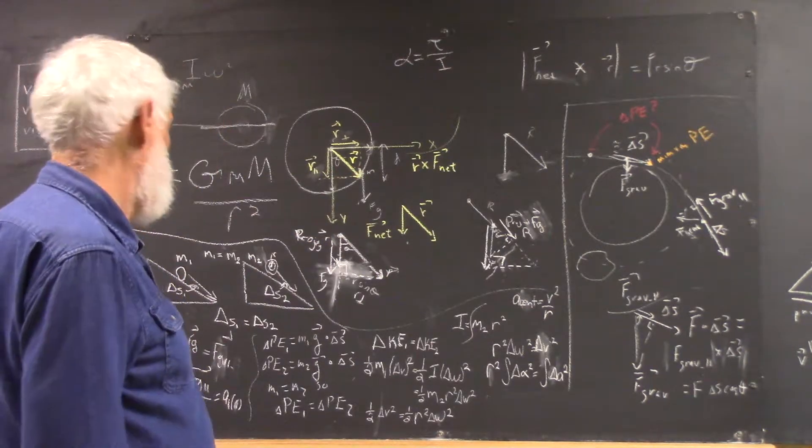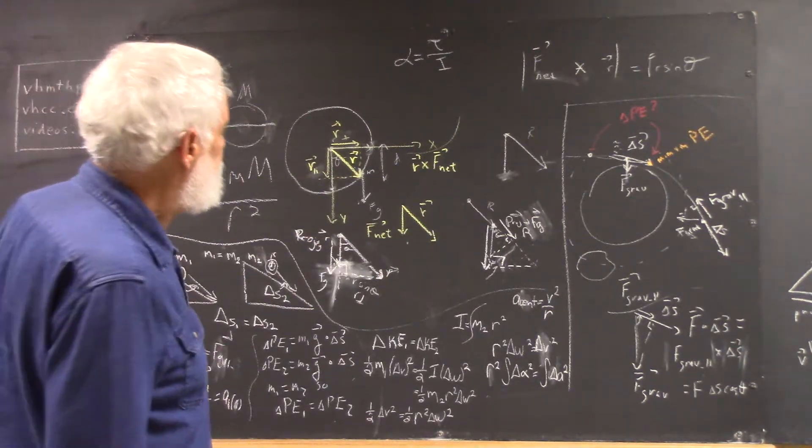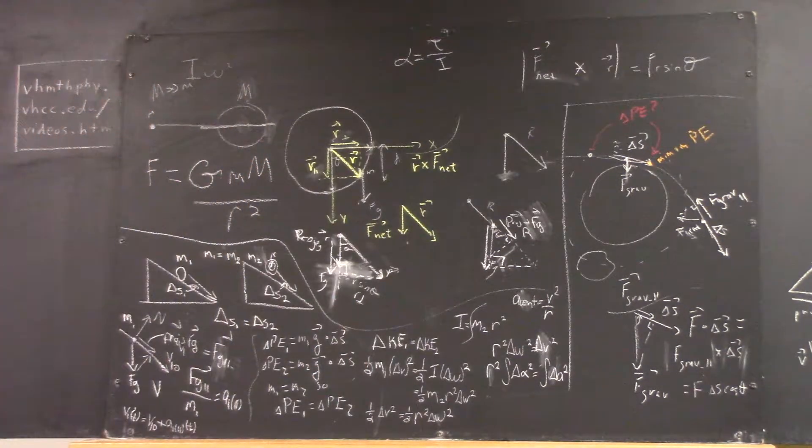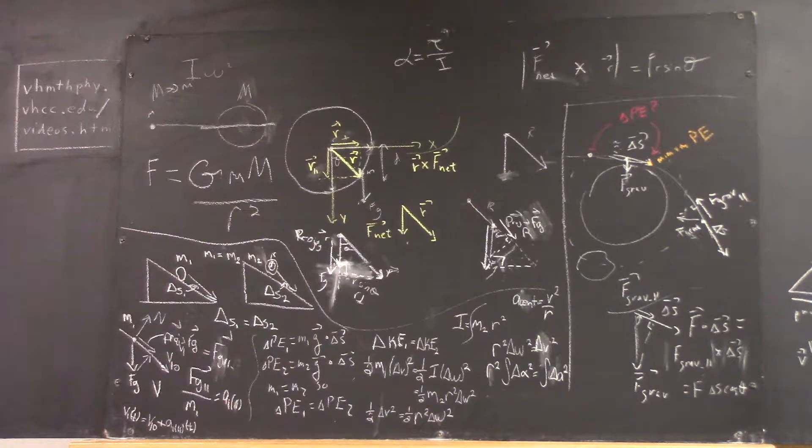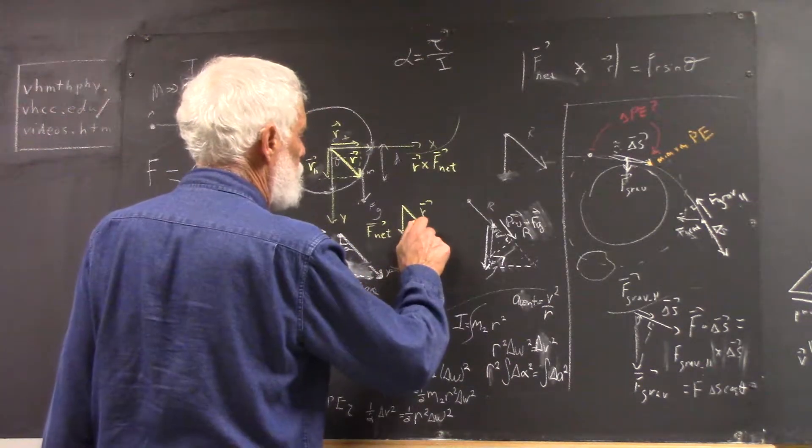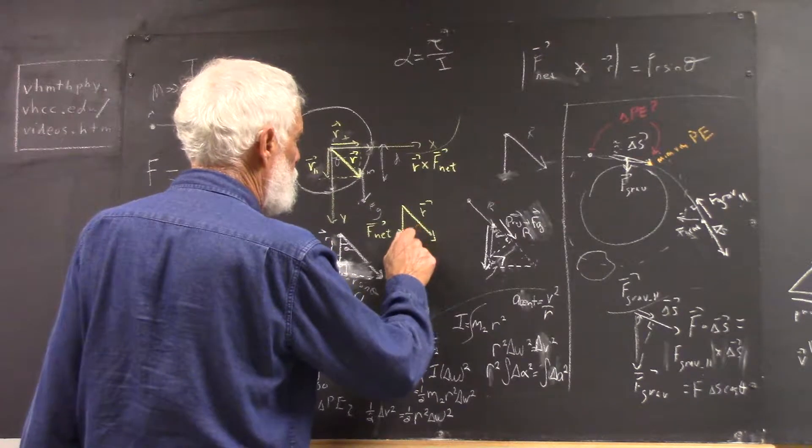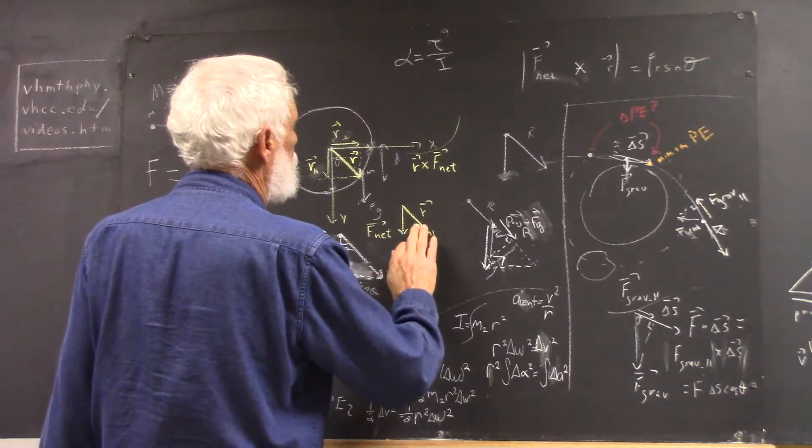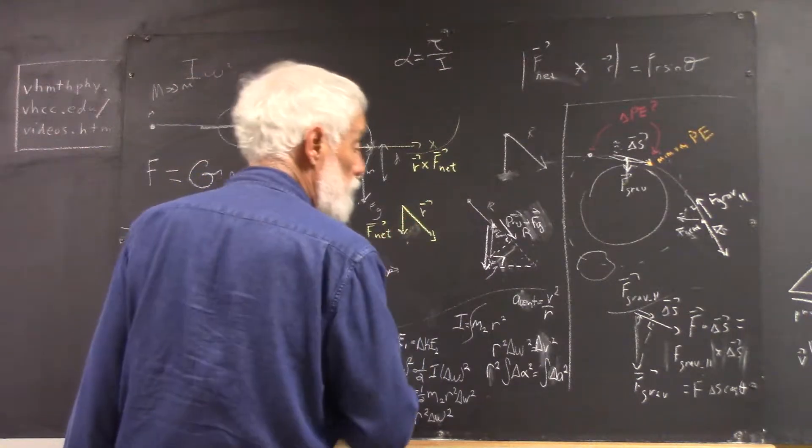Okay, then we're going to do a projection. Actually, maybe I'm not going to do the projection. Well, I'll draw the projection line. Okay, the projection is a dotted line. Projection of f-net onto r. Oh, sorry. That's not what I want to do. I want to project r onto f-net.